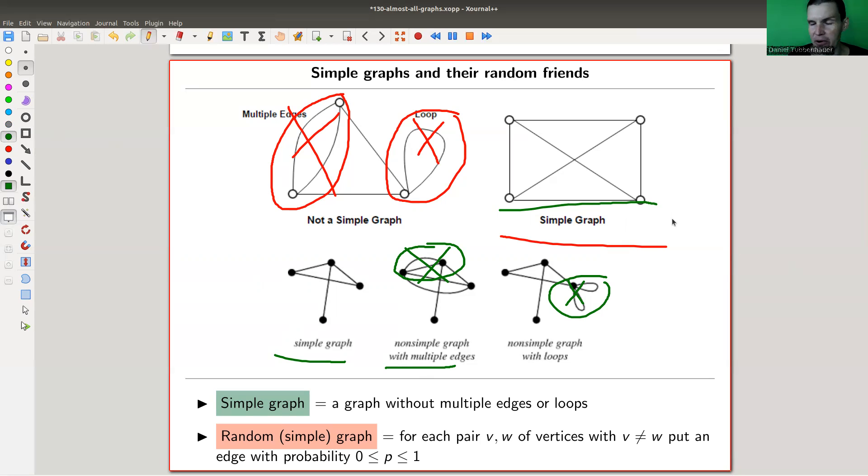A random graph, at least in this video, will be the following. For each pair of vertices V and W, you decide whether to put an edge between them by flipping a coin. The coin can have any probability p between zero and one. For each pair of vertices, you flip a coin - it might be a biased coin - and the coin decides whether you put an edge or not. That's my very simple random graph model.